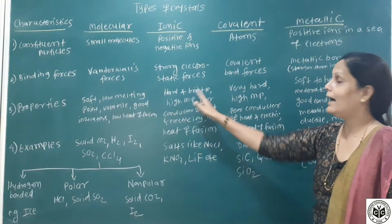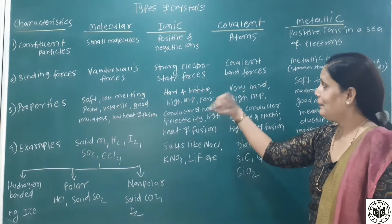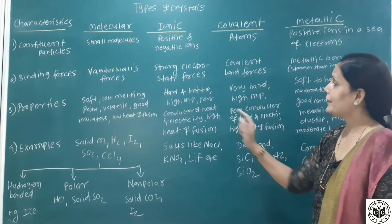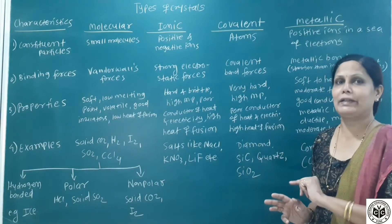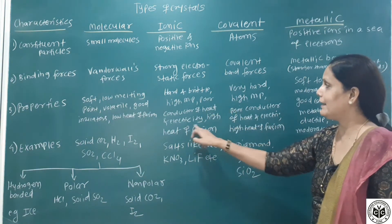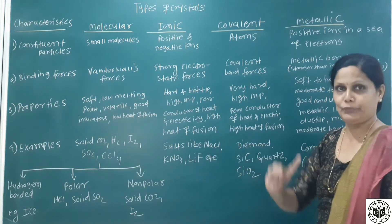Ionic solids are hard and brittle, high melting point, poor conductor of heat and electricity. But their solution is a good conductor of heat and electricity. Only solids are poor conductor of heat and electricity, high heat of fusion.